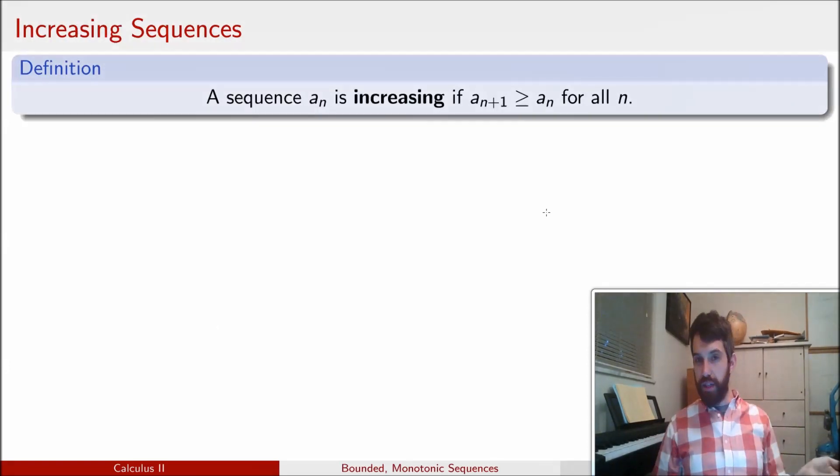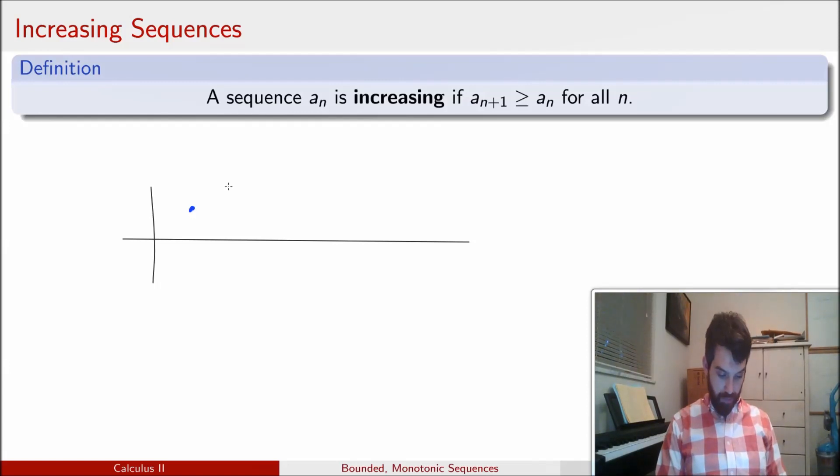The notion of a sequence is increasing is very much analogous to the notion of a function increasing. That is, as I go more to the right, that is bigger values of N, my function is bigger and bigger and bigger. I can visualize this again by plugging in some points, and they always get bigger. Maybe sometimes they're exactly equal, but the point is they never go down, and they carry on like this.